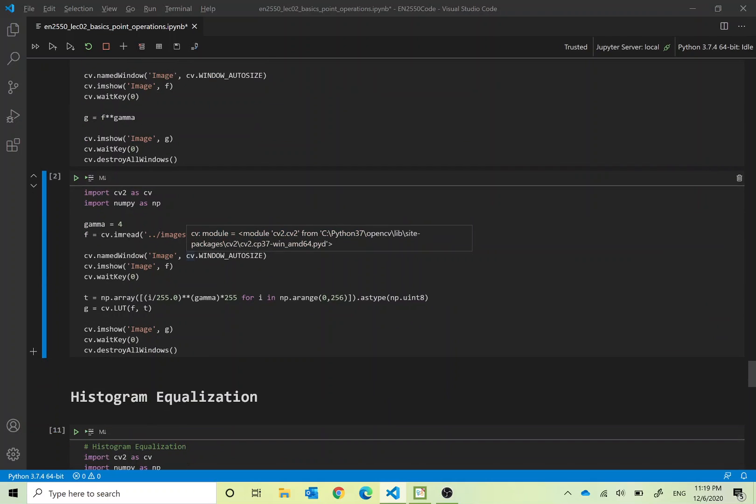Then we can do it in the faster way by creating the transformation in this fashion. Before when we plotted these gamma curves we used the same form. For i in np.arange 0 to 256, we divide i by 255 and raise it to the power of gamma, then multiply by 255. This is a uint8 set of numbers. Then we use cv.LUT as before. F is our image and T is our transform. Then we display that.